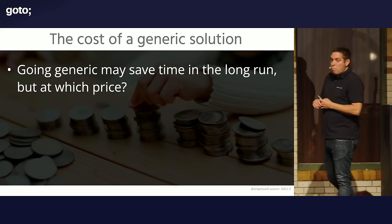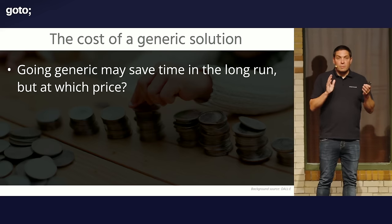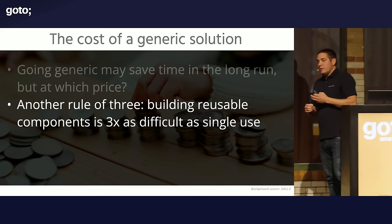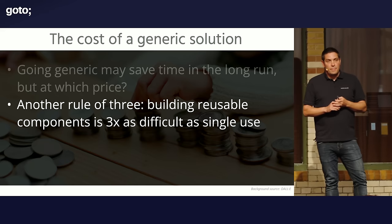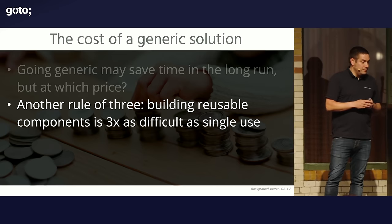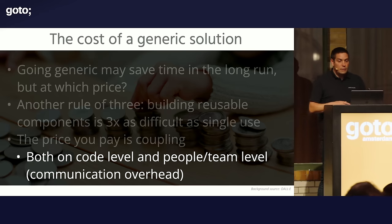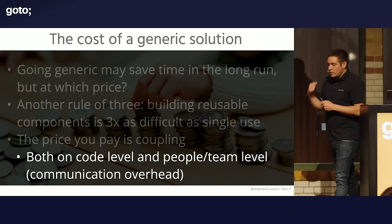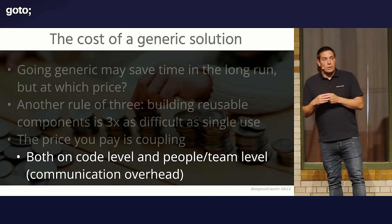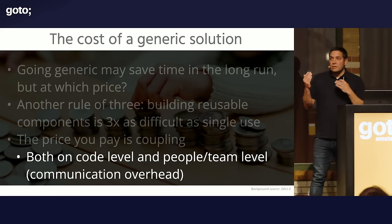Let's think about cost. Going generic will probably save you time in the long run — once you have something generic, next time it's free to use. Well, I tend to disagree. Building reusable components is three times as difficult as single use — because of talking between teams, matching different use cases, having different points of view about implementation. The price you pay is coupling the teams using the same software, both on a code level and on a people and team level, because there's communication overhead. If you want to change something in a generic library, the second team doesn't have time to look at it, and the third team doesn't agree with your changes — then you're stuck. If it's only in your local code base, you don't need to talk to them.